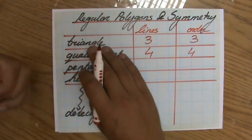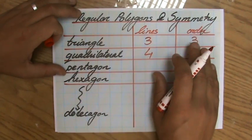And for the regular triangle, that's the three-sided polygon, three lines of symmetry, order of three.